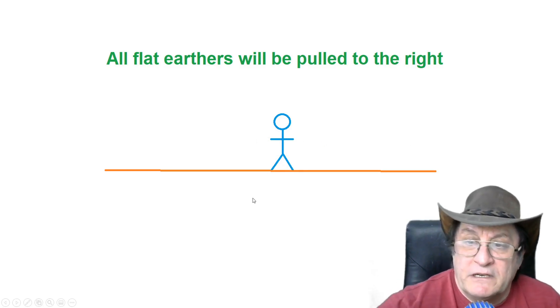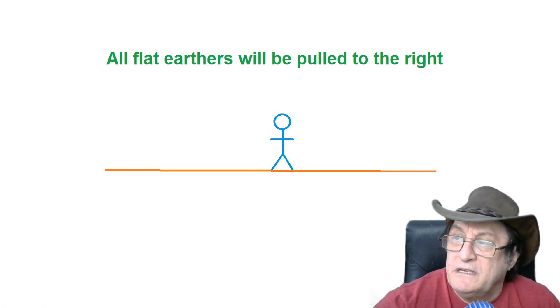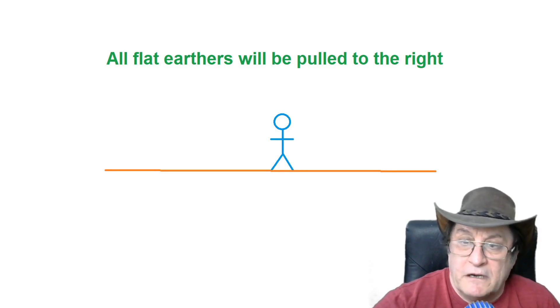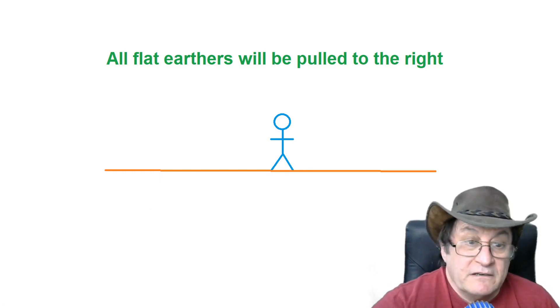He would obviously need to be pulled to the right. So a 0.1 degree slope is something like 30 meters over 11 kilometers. So do you think that you would be pulled downhill if you tried to walk that slope? I don't think so. You wouldn't feel it. You wouldn't even notice it. You wouldn't notice 0.1 of a degree.